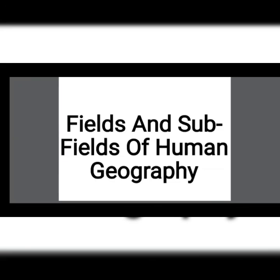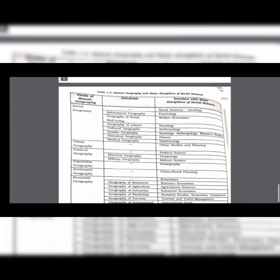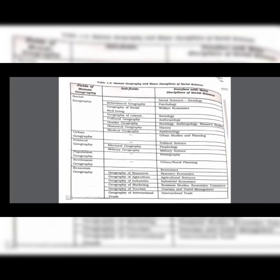Human geography's relationship with other subjects will be explained here. The fields of human geography include social geography, whose sub-fields are: behavioural geography, geography of social well-being, geography of leisure, cultural geography, gender geography, historical geography, and medical geography.